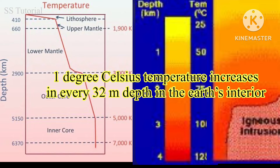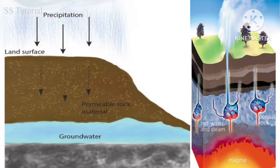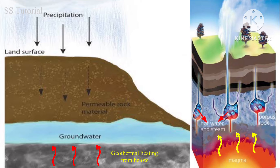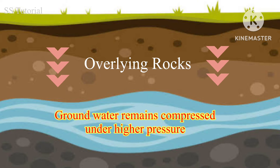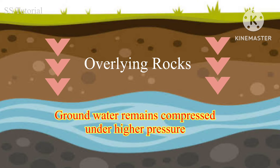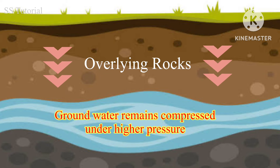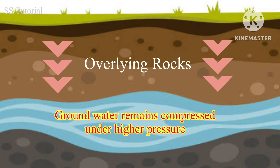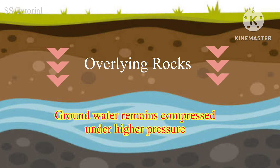When rainwater or other water enters into the earth's interior, this groundwater is heated up and even turned into steam due to the contact of geothermal heat from below, or due to nearby magma. We also know that groundwater remains compressed under higher pressure due to the overlying rocks.